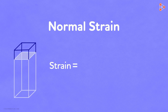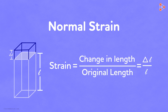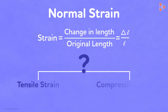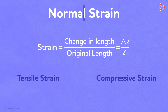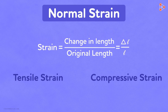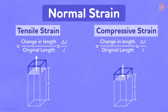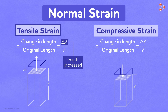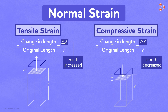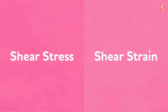We know that strain is nothing but the ratio of change in length, represented by delta L, over the original length L. Since we have already seen what tensile and compressive stress means, normal strain is also classified into these two types. This formula remains the same in both cases. Except that in tensile strain, delta L is the amount by which the length increased, and in compressive strain, delta L is the amount by which the length decreased. In the next video, we will discuss what shear stress and shear strain mean.